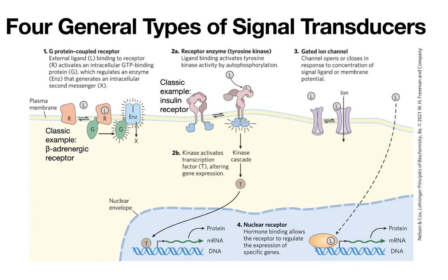By having an idea about the general logic, you can then go and look at pathway diagrams and try to figure out what's going on — what might happen if you have mutations at different points, if you have agonists or antagonists, places you might want to see regulation — all that good stuff.